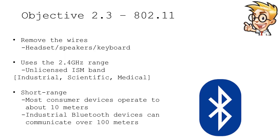Not only do we often see these 802.11 wireless networks, we also extensively use Bluetooth networks. This effectively removes the wires from peripherals connected to our mobile devices. If you're using a handset, external speakers, or an external keyboard, it's probably using Bluetooth to communicate. Bluetooth also uses the 2.4 gigahertz band — specifically the unlicensed ISM part, which stands for Industrial, Scientific, and Medical.